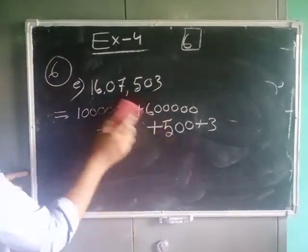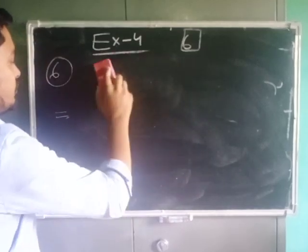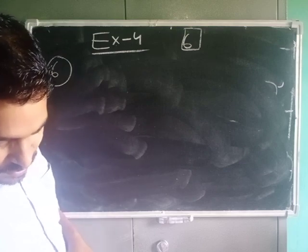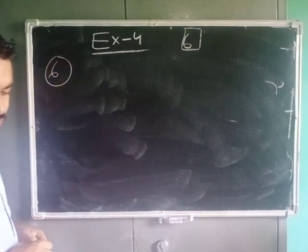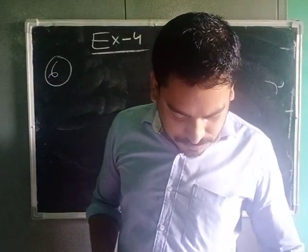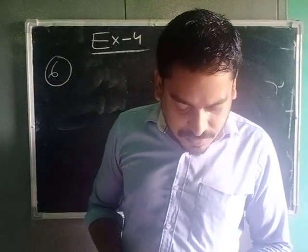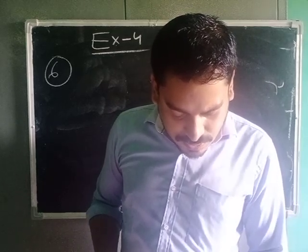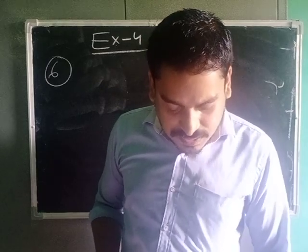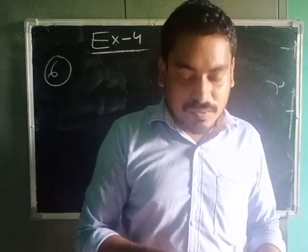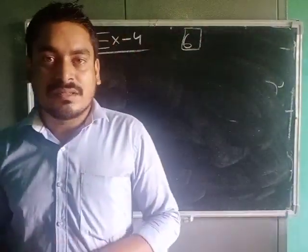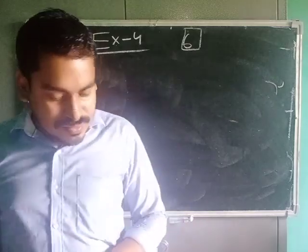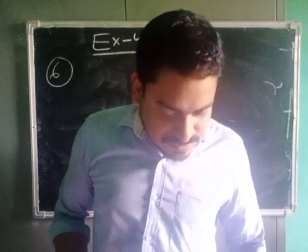And number 7 it is very easy, the exponent form is given, you have to write them in short form, that means you have to find out the sum. So you see in question number 8, write the successor of each of the following numbers. Successor means the next number, you have to add one number with the given number and predecessor means before number. You have to subtract one number from the given number, then you will get the predecessor. This is very easy, you have already learned.